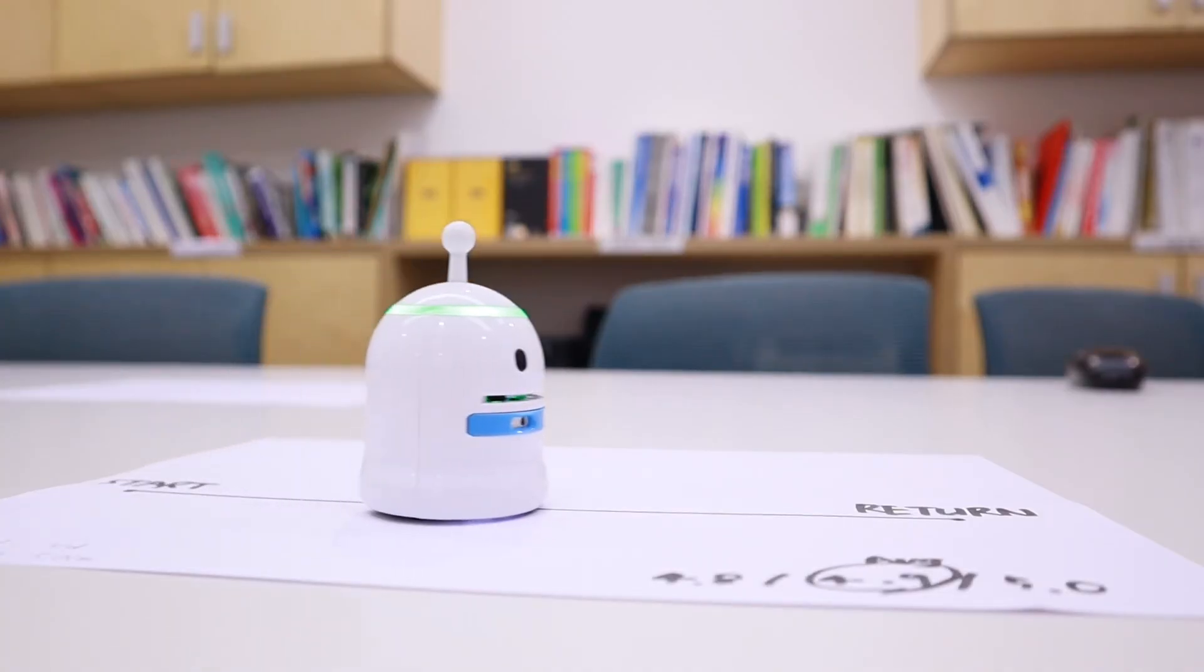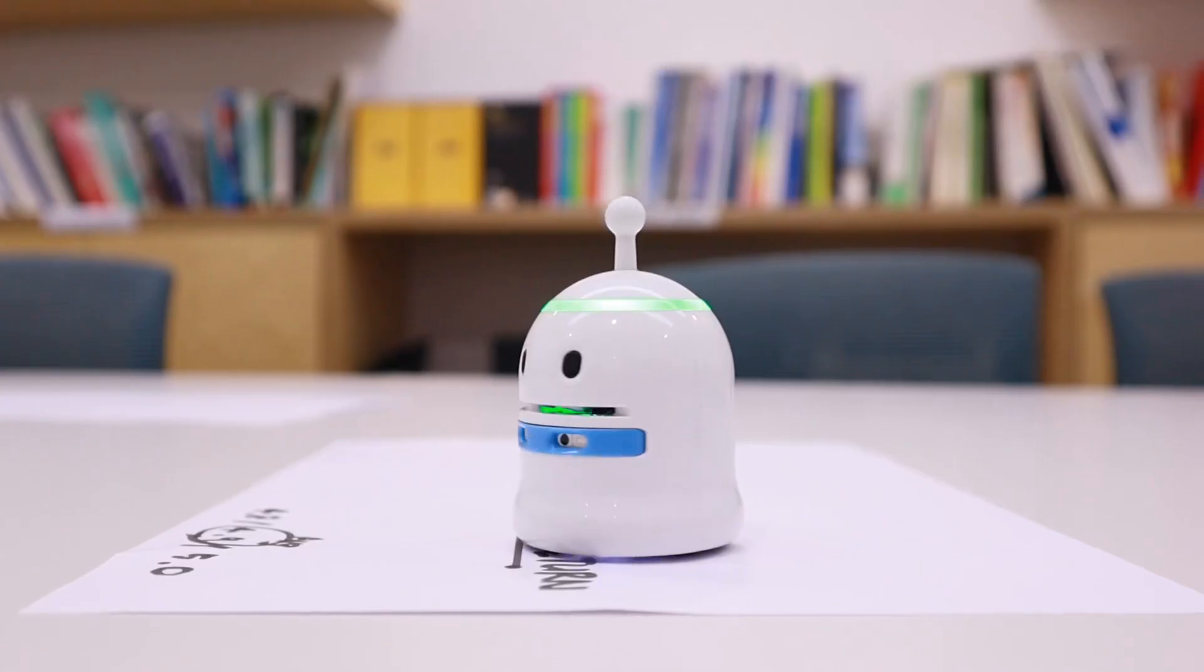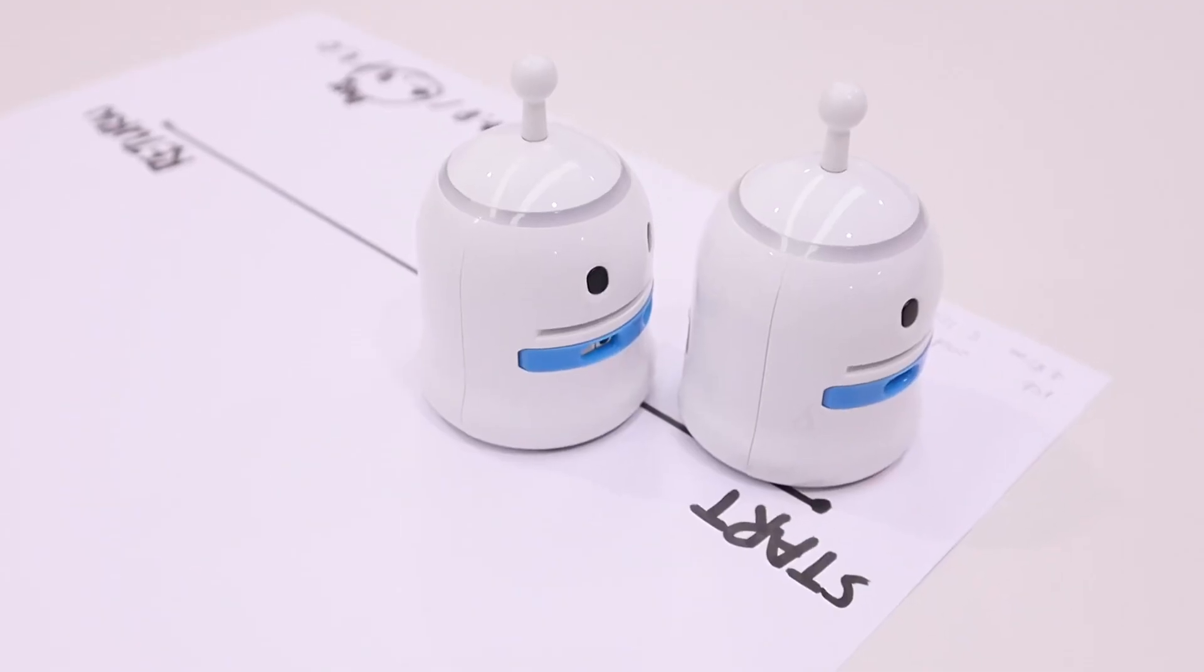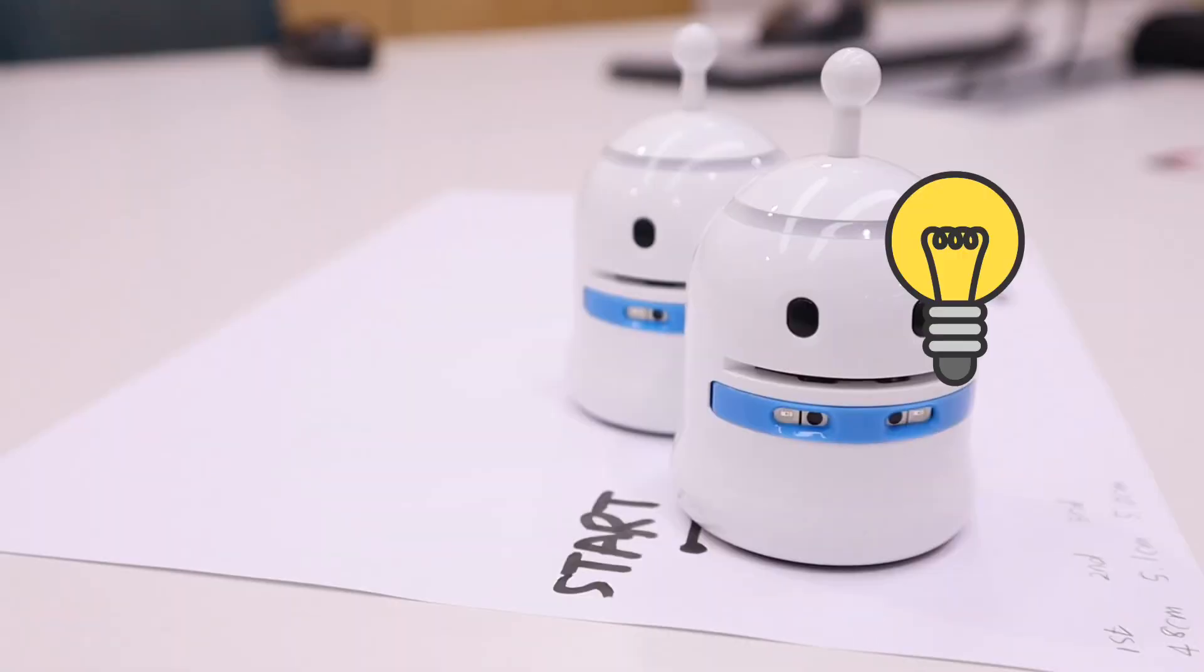After designing the algorithm, observe the movement of the robot. The winner of this activity is the person who moved the robot closest to the departure and arrival point after turning around the return point.